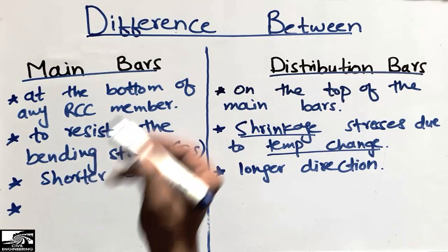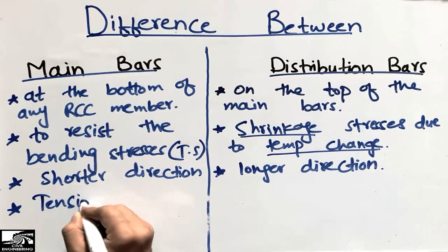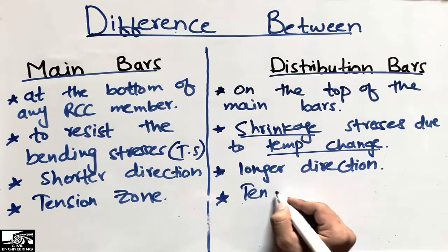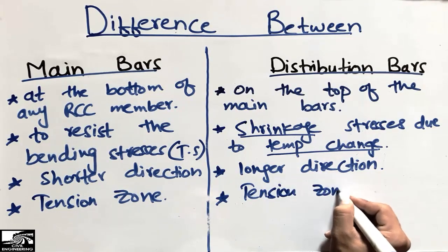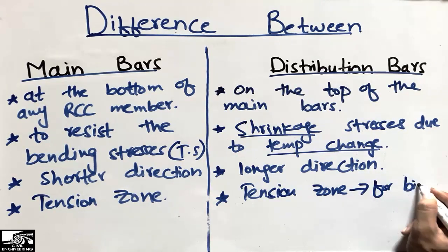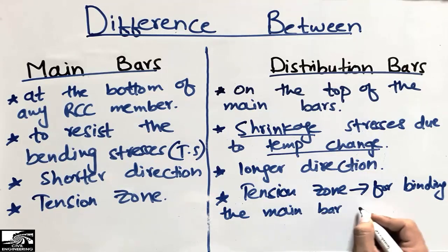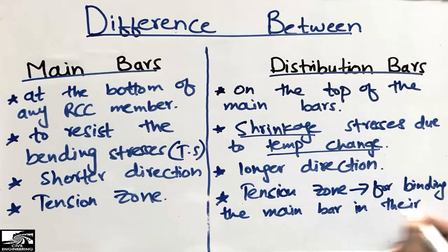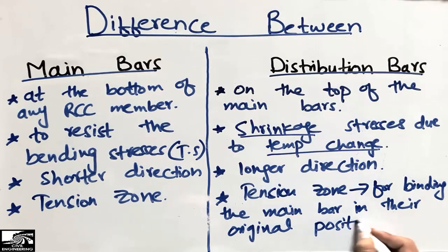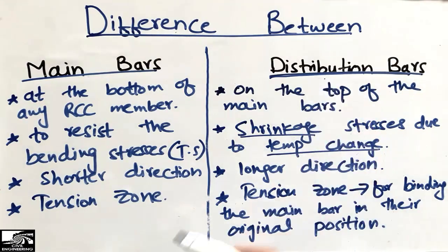Another difference is that main bars are provided in the tension zone. Distribution bars are also provided in the tension zone, but their purpose is for binding the main bars in their original position, so that the main bars do not move from their original position. That is why distribution bars are provided — their function is like this.